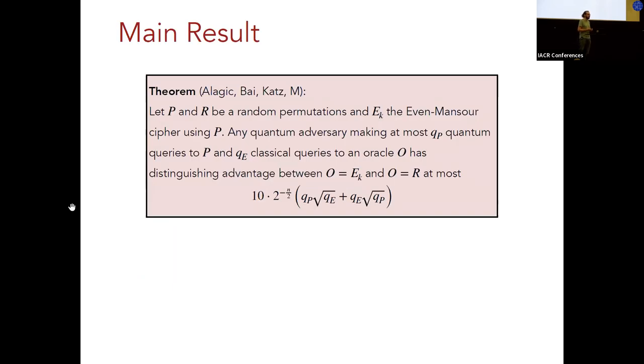Okay, so let me move on to presenting our results, and that basically consists of a proof of security for the Even-Mansour cipher in the post-quantum setting or in the Q1 model. So let me go through the theorem together with you. So we have two random permutations, P and R. P is the primitive, and R is the random permutation that the cipher should be indistinguishable from. And we have the Even-Mansour cipher that's constructed using P. Now, any quantum adversary that makes at most QP queries to P, quantum queries, and QE classical queries to an oracle O, cannot distinguish the situation where O is equal to the Even-Mansour cipher from the situation where O is equal to the random permutation, with an advantage larger than the one that is shown on the slide.